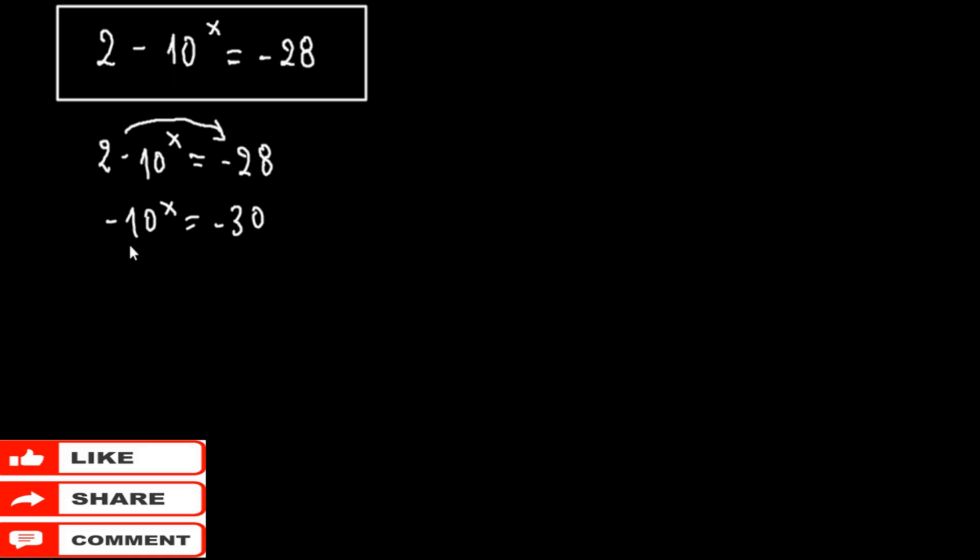Here we multiply both sides with minus 1 so we don't have negative. So this becomes 10 to the x equals 30.